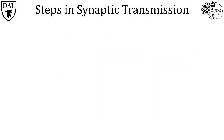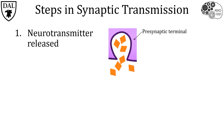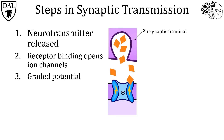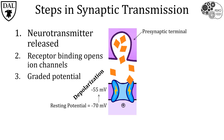Let's review the steps so far. First, neurotransmitter is released from the pre-synaptic terminal. Second, that neurotransmitter binds to receptors, opening their ion channels on the post-synaptic side. What happens next depends on the type of ion channel receptor that is activated, as different receptors are permeable to different types of ions. If the channel opens and positive ions enter, then the inside of the neuron will become less negative — for example, the potential might rise from its resting potential of minus 70 millivolts to minus 55 millivolts. This is referred to as a depolarization and is considered excitatory.